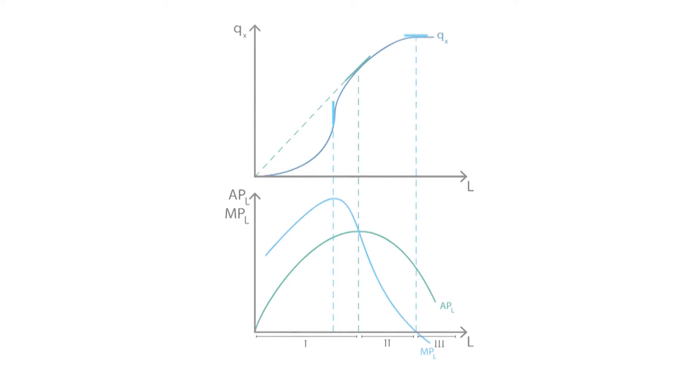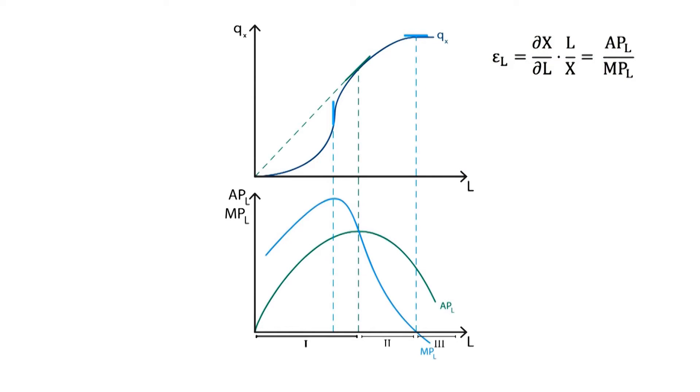This relates to output elasticity, which is the change in quantity resulting from a change in productive inputs. In Phase 1, a one-unit change in labor input produces a much larger return in production levels. With increasing returns to scale, output elasticity is greater than 1.